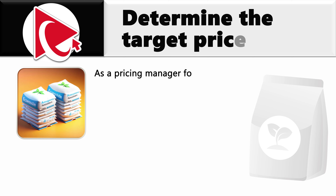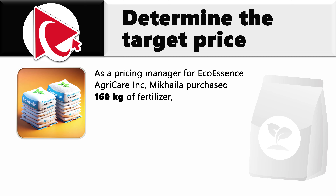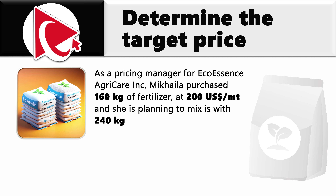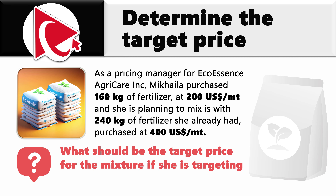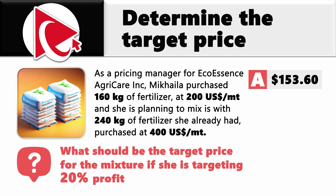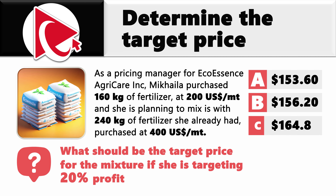As a pricing manager for Ecoessence AgriCare Inc., Mikaela purchased 160 kilograms of fertilizer at $200 US dollars per metric ton, and she is planning to mix it with 200 kilograms of fertilizer she already had purchased at $400 US dollars per metric ton. What should be the target price for the mixture if she is targeting 20% profit? You need to calculate and select the final price out of 4 possible choices: Choice A — $153.60; Choice B — $156.20; Choice C — $164.80; and last but not least, Choice D — $172.40.